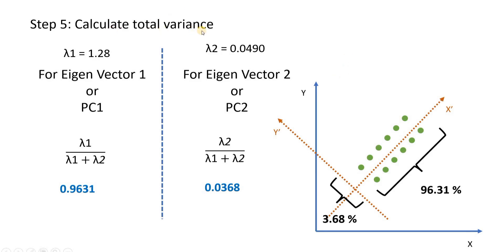Step 5: calculate the total variance explained by each principal component. This is important especially when you have 50 features — you need to decide how many principal components to keep. Using the formula for total variance, Principal Component 1 represents 96.31% of the dataset, while Principal Component 2 represents only 3.68%. So we can easily eliminate Principal Component 2. That is the main idea behind calculating total variance.